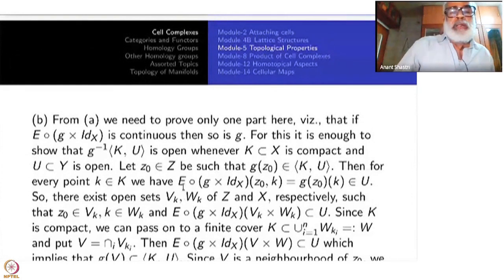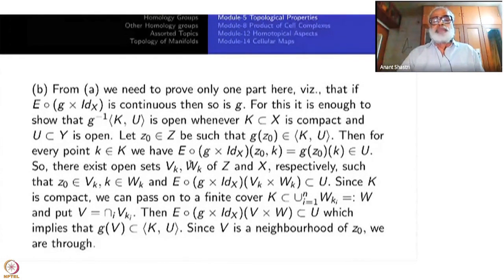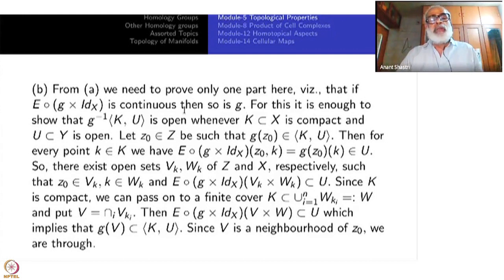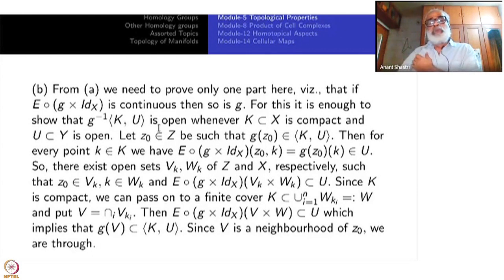Let us go to Part B. There are two ways. One way: if G is continuous, then G cross identity is continuous, and the composite will be continuous because E is continuous — we just proved that. Now let us prove the converse. Assuming the composite is continuous, I want to show G is continuous. For this, it is enough to show that G inverse of all these sub-basic open sets [K, U] is open, where K is compact and U is open. Taking inverse images of those sub-basic open sets being open will mean G is continuous.